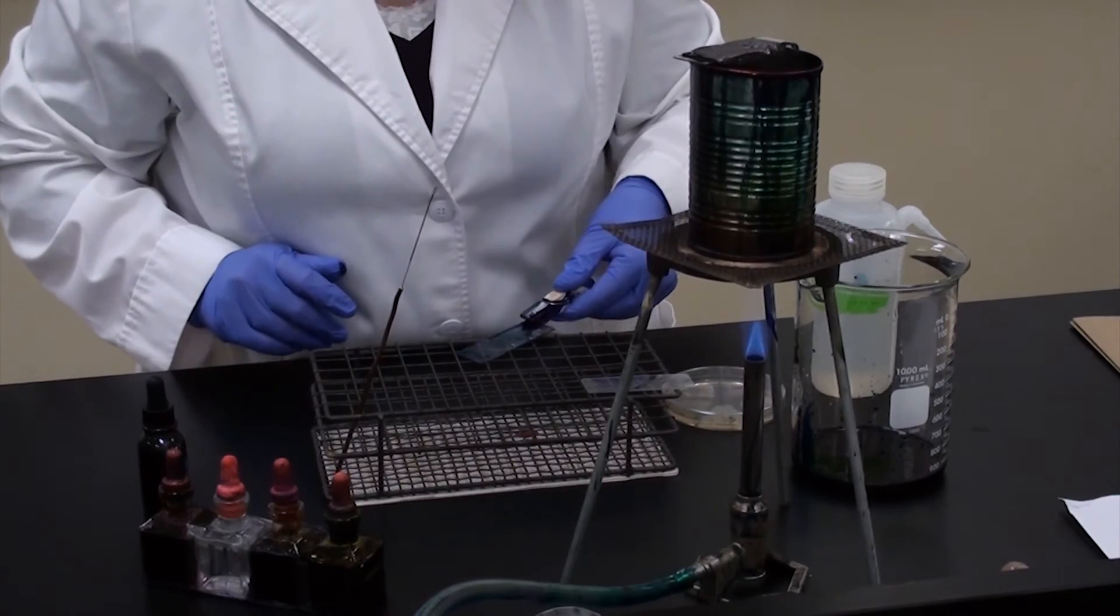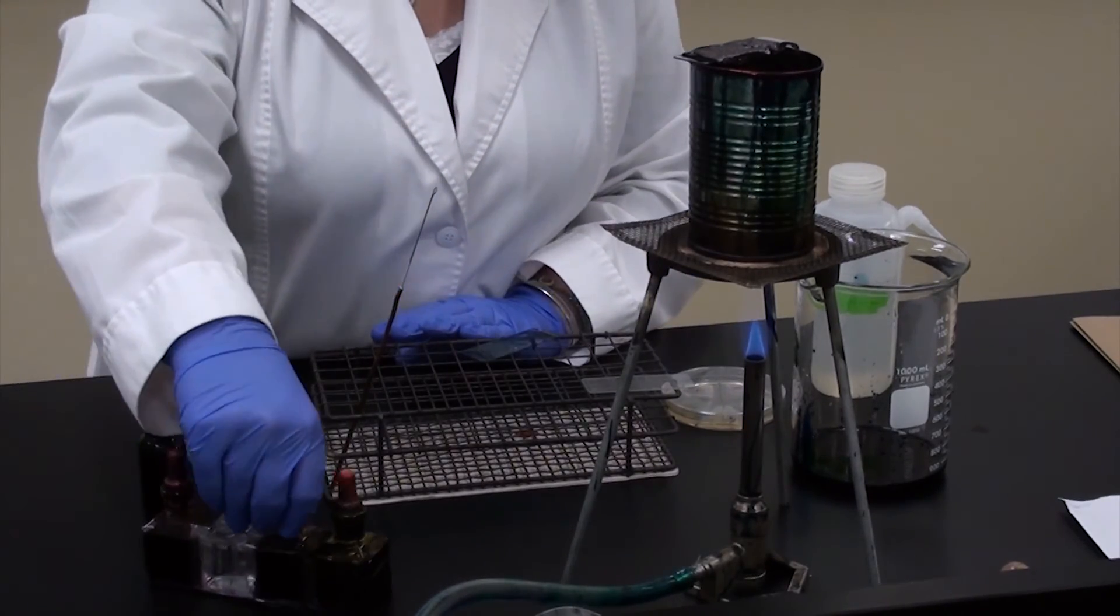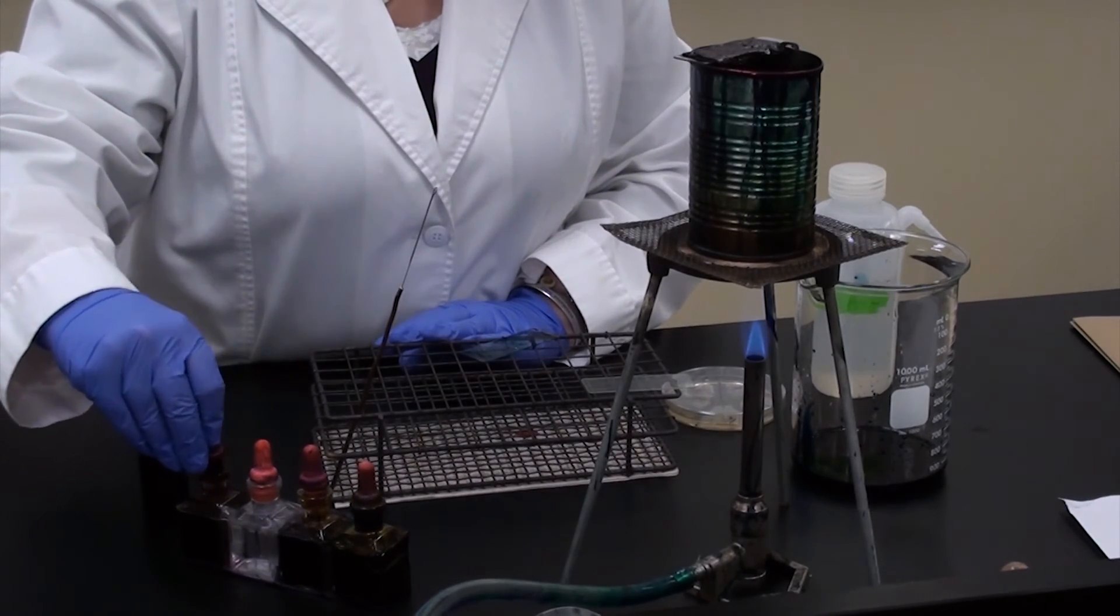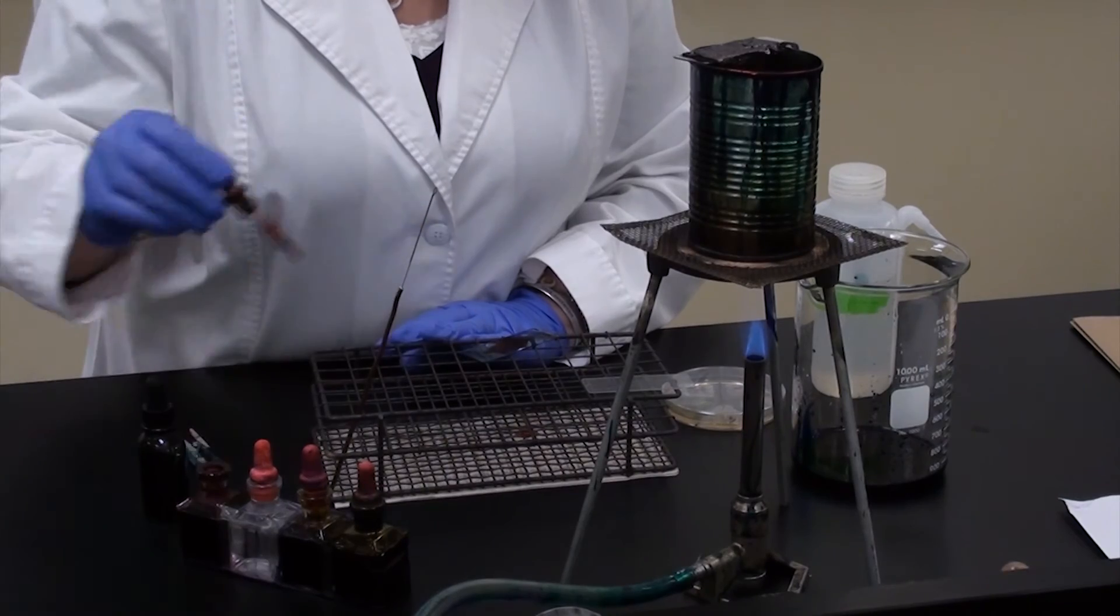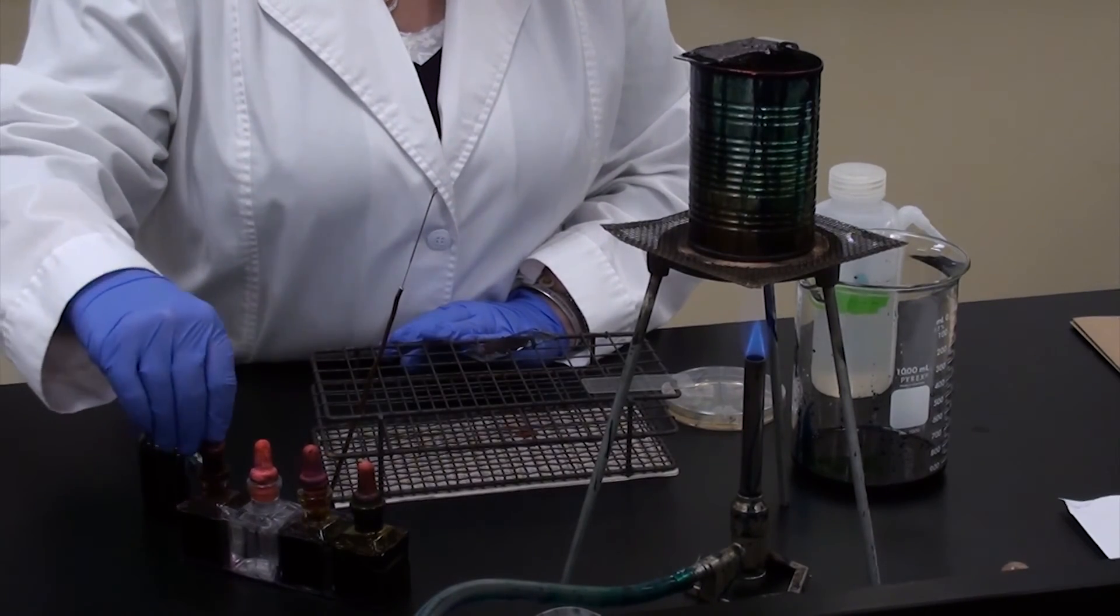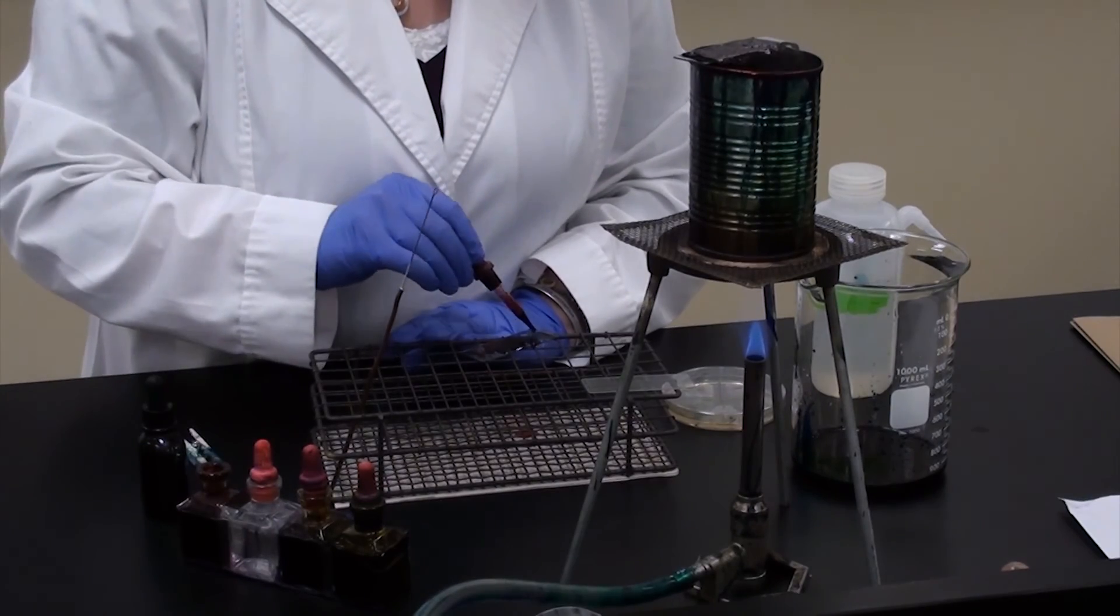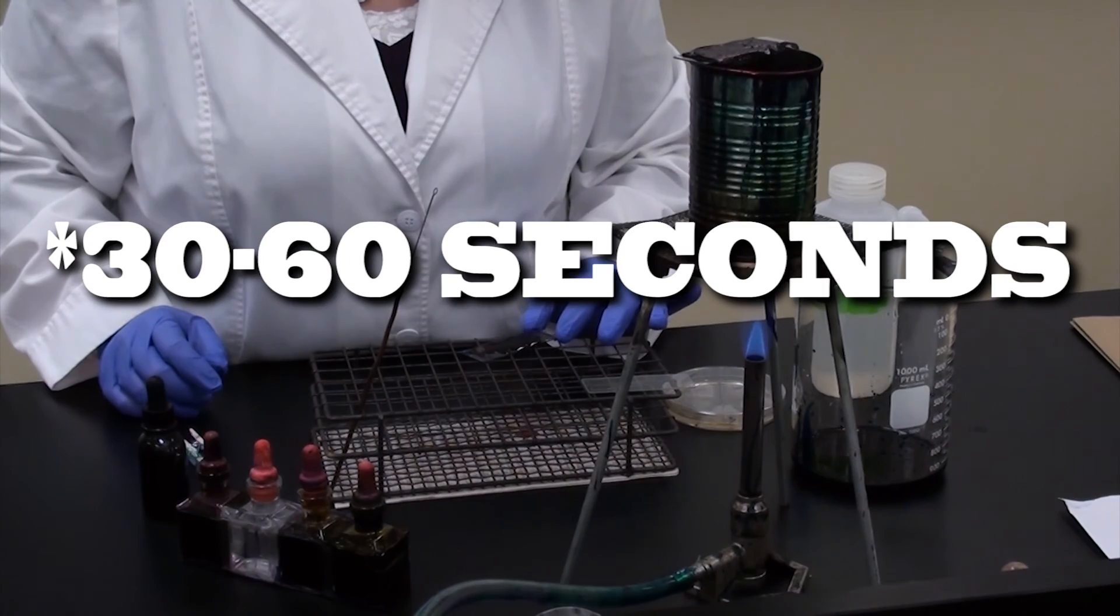Once the slide is thoroughly rinsed, you're going to apply a counter stain. The counter stain is a positive stain or a simple stain. In this case, I'm going to use safranin that will stain the vegetative cells remaining in the sample. Just as before, flood your slide, nice and moist, and let it sit for 30 to 60 seconds to stain the vegetative bacteria.